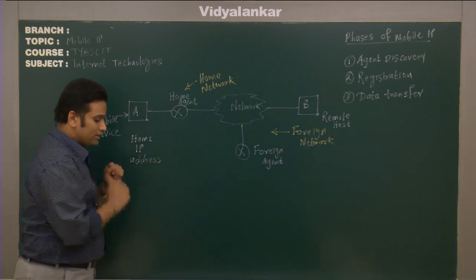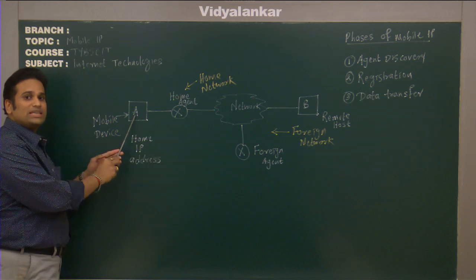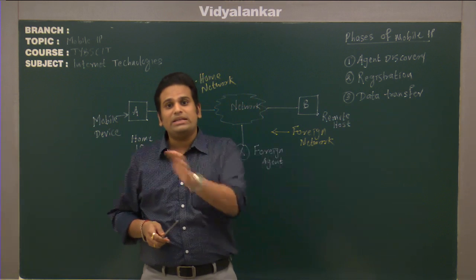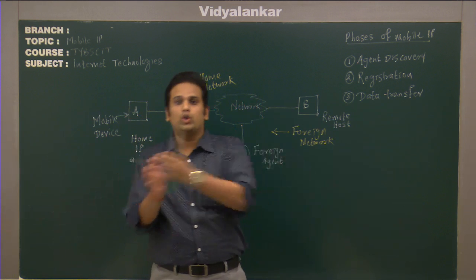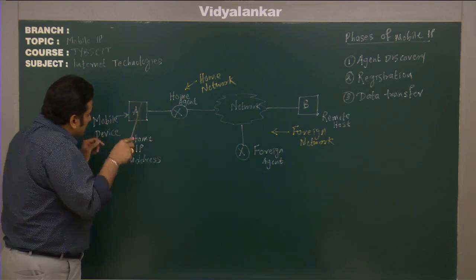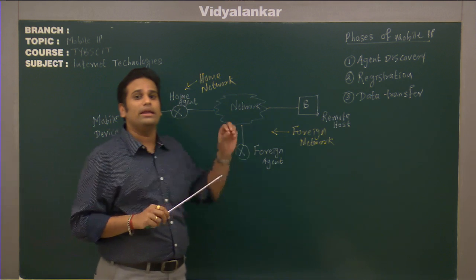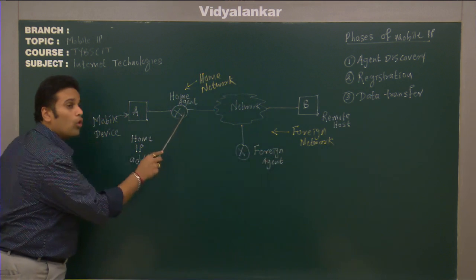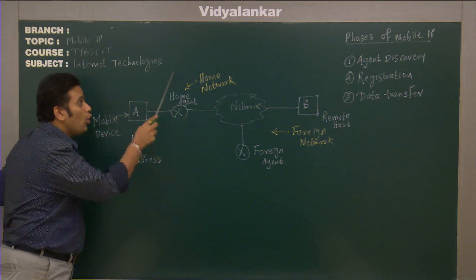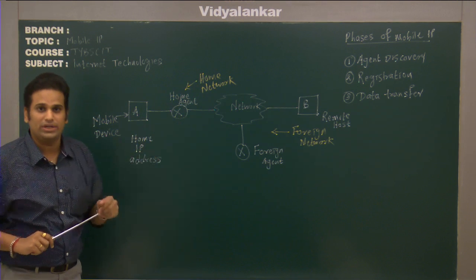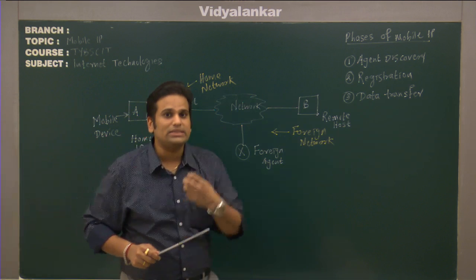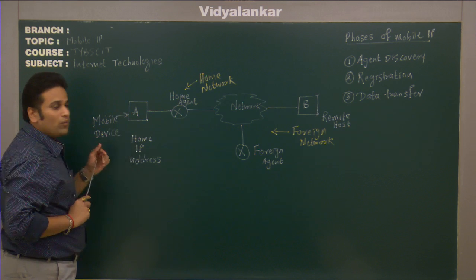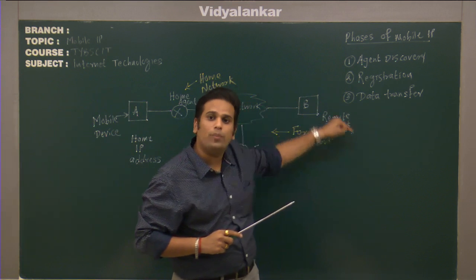What you can see is machine A, which is actually a mobile device. It is called a mobile device because it can change its location from one part to another. Machine A is right now in a network known as its home network, managed by the home agent. A router which manages the home network is known as the home agent. Initially when I start my mobile device in its home network, machine A will go through three phases of Mobile IP.